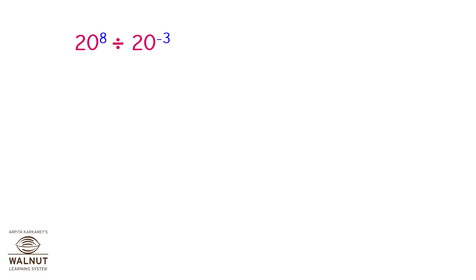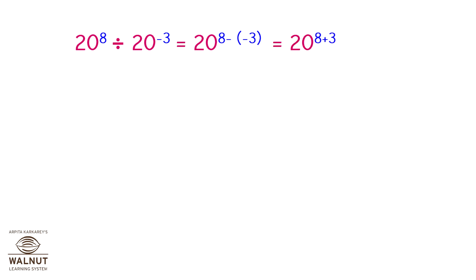Let us try this one: 20 raised to 8 divided by 20 raised to minus 3. The base is the same so we subtract the exponents: 20 raised to 8 minus bracket minus 3 bracket, which is equal to 20 raised to 8 plus 3. So it becomes 20 raised to 11.